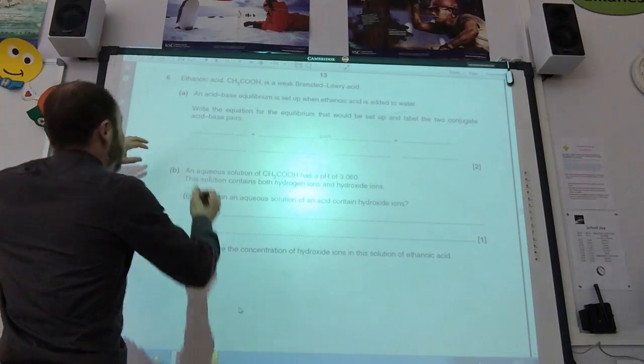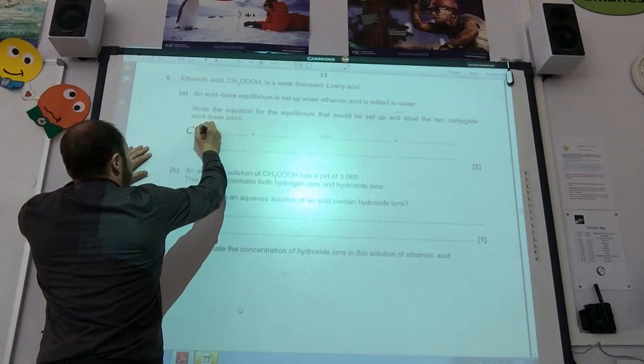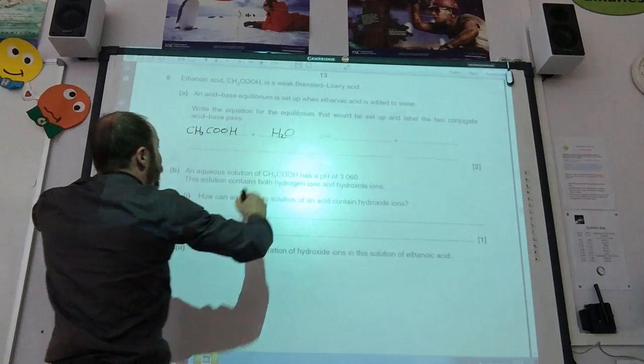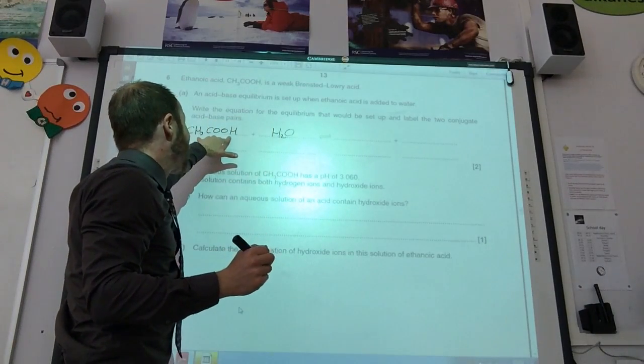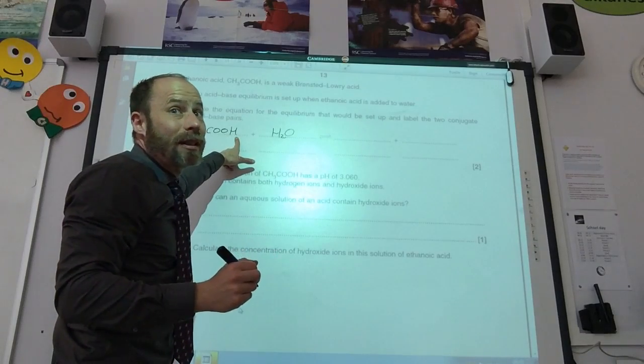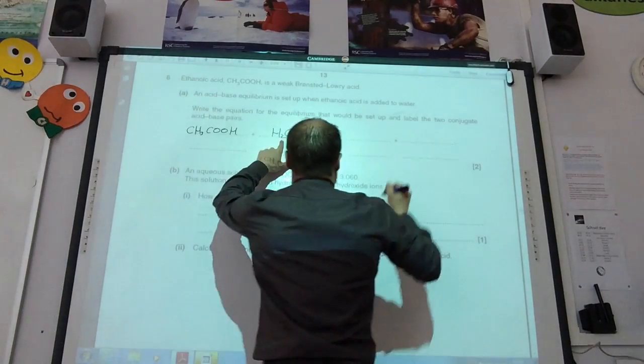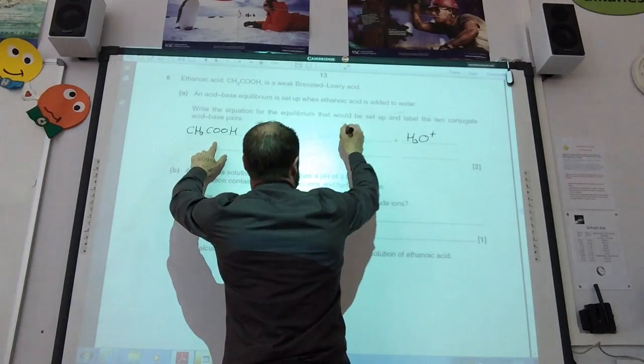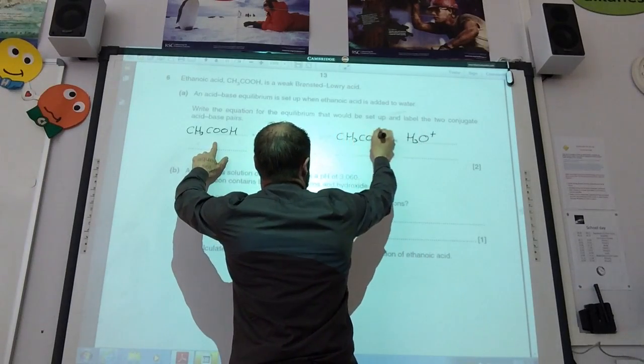So we have ethanoic acid, CH3COOH, in water. If this is ethanoic acid, what's going to happen to that moisture? The H2O. And this is going to become CH3COO-.